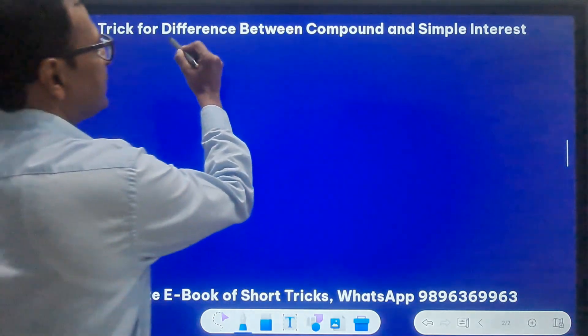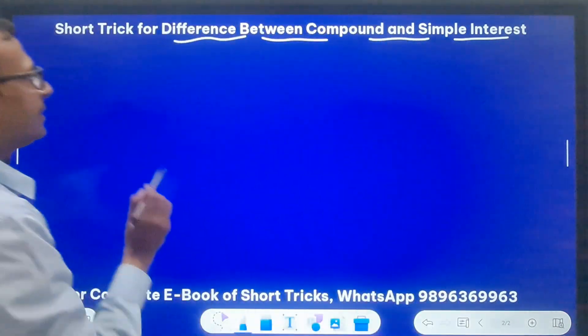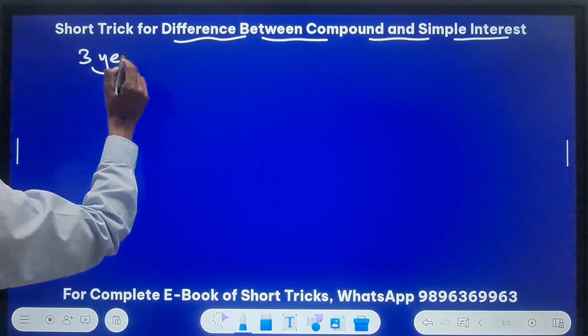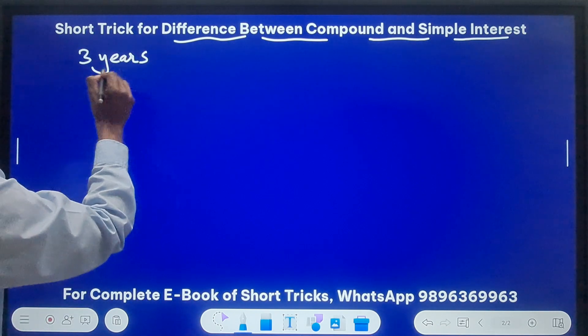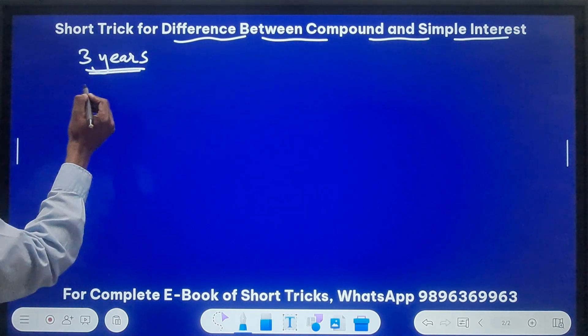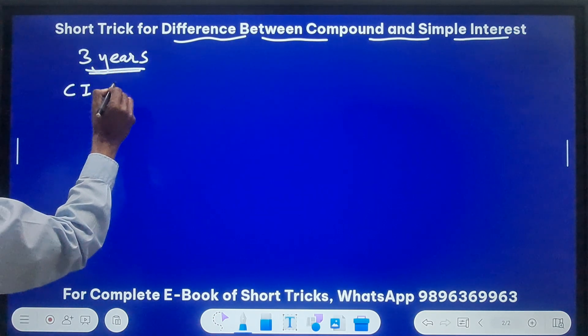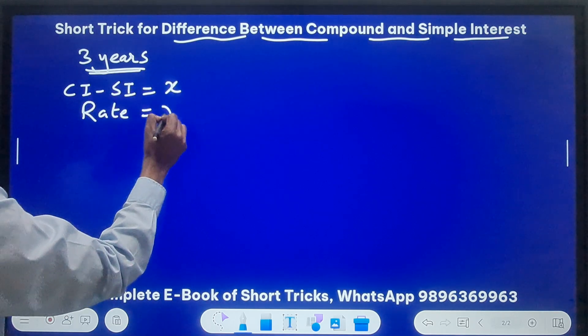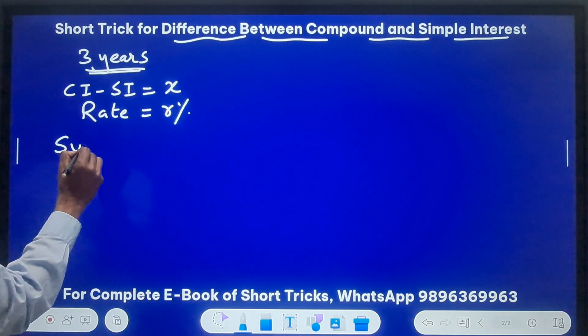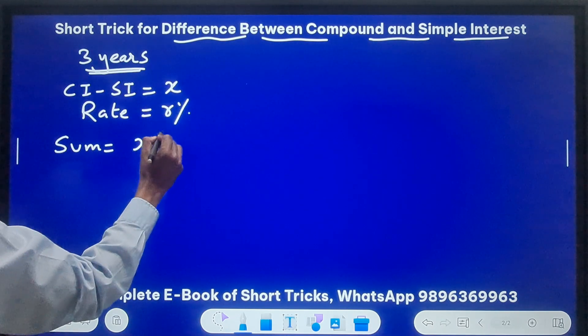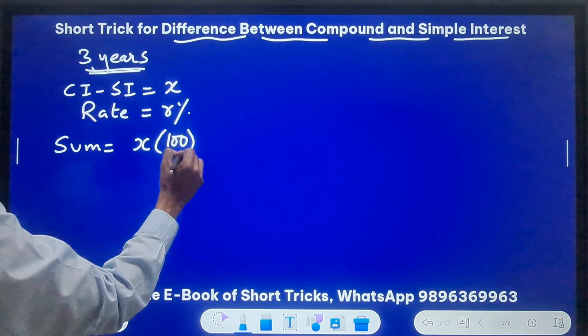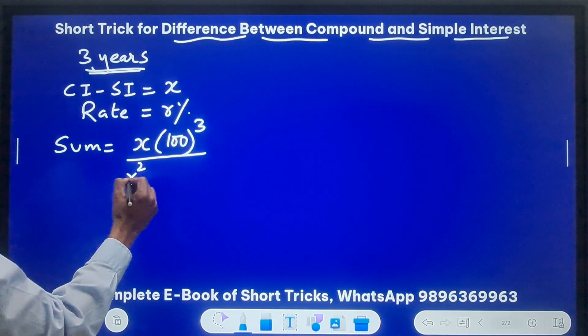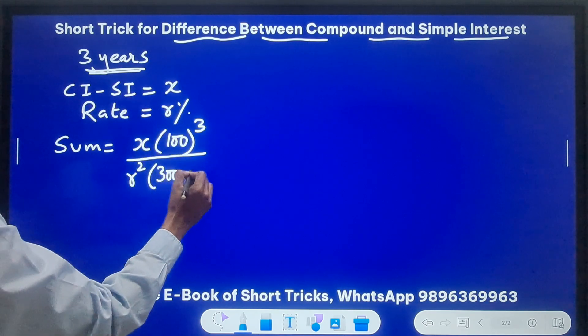Let's see what is the difference between CI and SI. Now I am taking the time as 3 years. Now in case of 3 years obviously something will change. For 3 years, if you again assume that the difference CI minus SI is say X and the ROI, the rate of interest, is R percent per annum, then this sum is given by X, that is the difference, times 100 cube and divide that by R square, that is the rate of interest square, and times the sum of 300 and R.